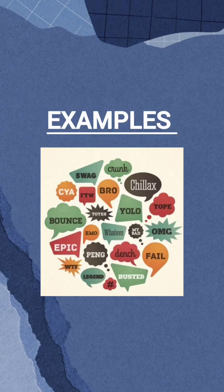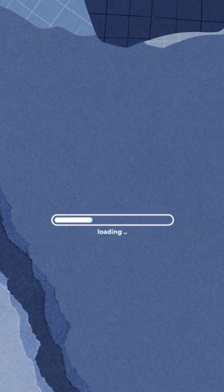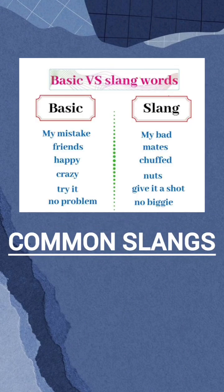Now we have examples of slangs. This time we have made different kinds of slangs. The first category is common slangs, which we use in routine. For example, 'my bad' means my mistake. 'Nuts' means crazy. 'No biggie' means no problem.